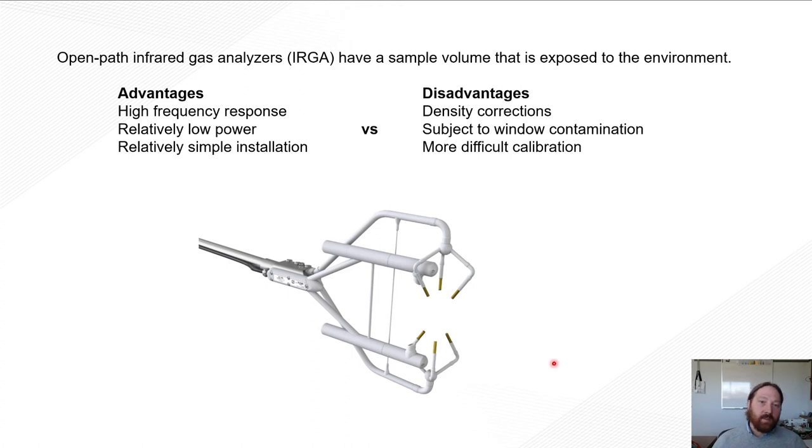So some disadvantages is, one of them is we have to account for density effects on our CO2 measurements. So temperature and water vapor can affect our CO2 densities, because we're working in densities, and make it look like an apparent flux when there isn't a real flux occurring. This is corrected by something called the Webb-Pearman-Leuning correction, and is just another correction that we have to worry about with an open path.